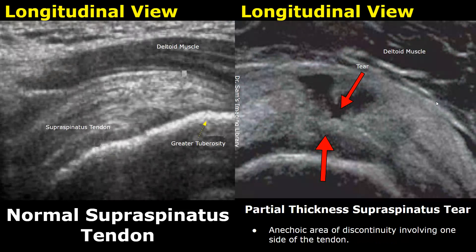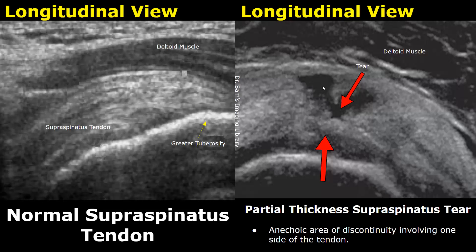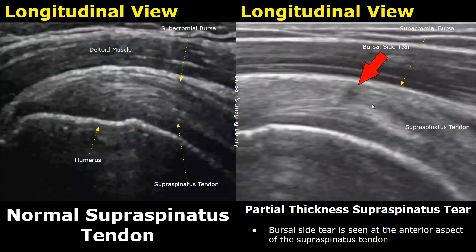This is a partial thickness supraspinatus tear. We see an anechoic area of discontinuity that involves only one side of the tendon — it does not go all the way through the whole thickness. Here is another image of a partial thickness tear; it is a bursal side tear because it is seen at the anterior aspect of the supraspinatus tendon, which is called the bursal side.